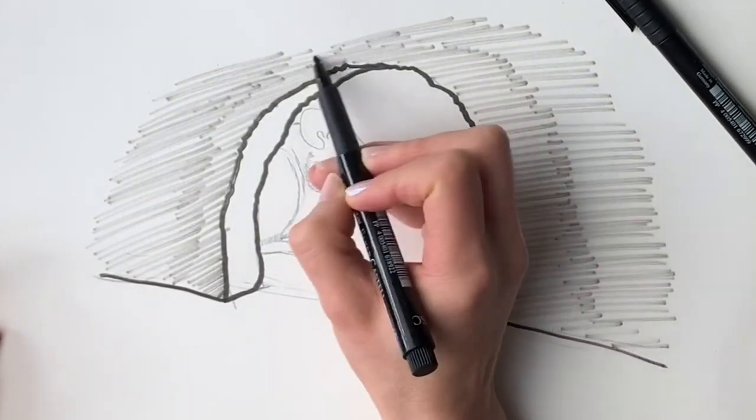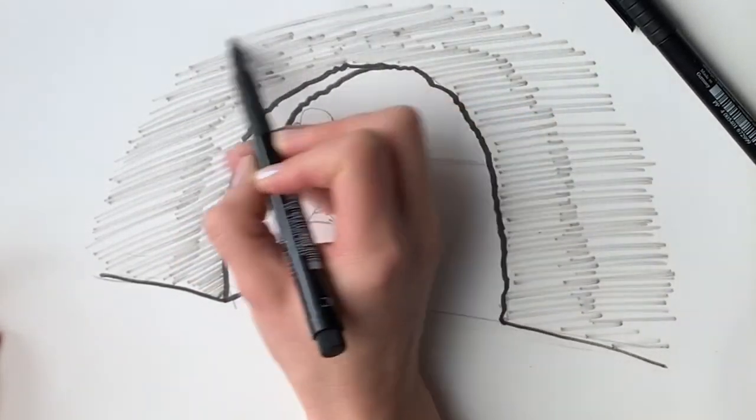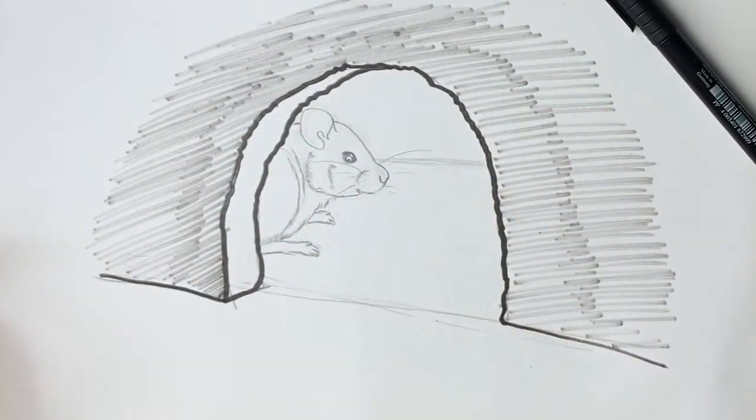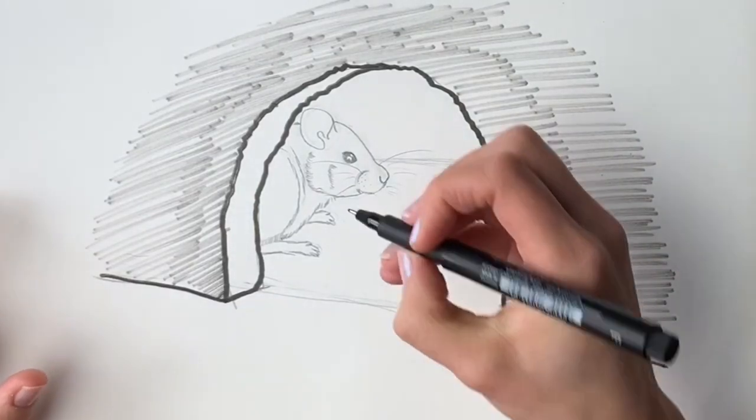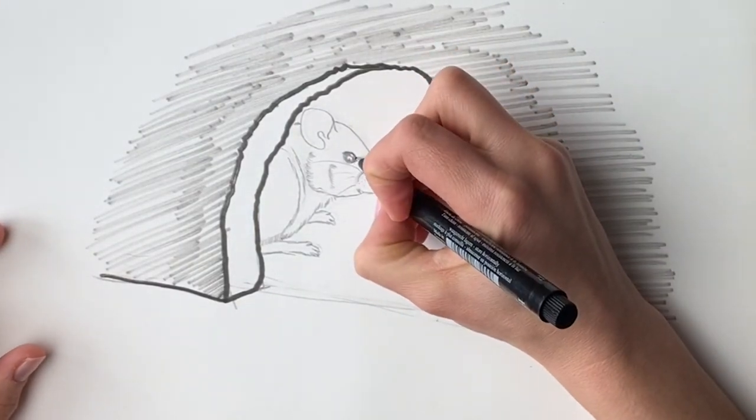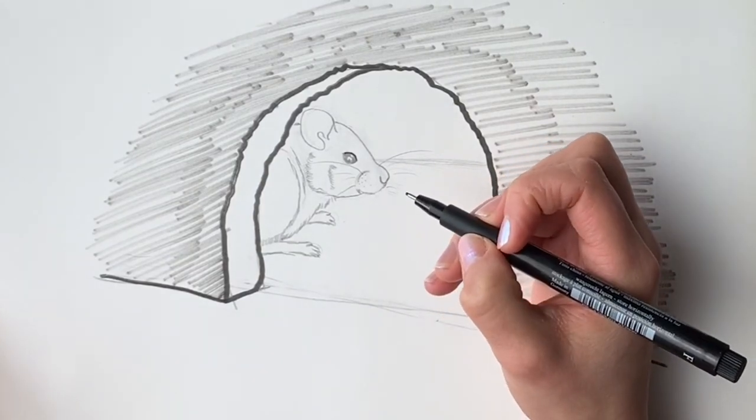There we go. Even sounds like a little mouse doesn't it? Squeak squeak squeak. There we go. Okay. Now we're going to draw the mouse in a finer pen. So this is so that I can get some more detail. So I'm just going to go over the shapes that we did before. And I'll speed this up a bit.